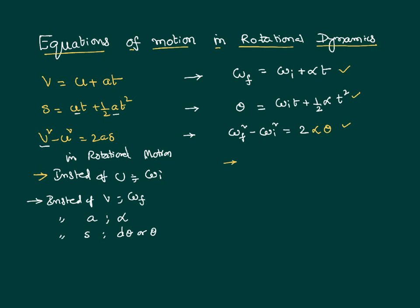The variables are omega-I, omega-F, theta, alpha, and time T. In any given problem, out of these variables in a given equation, any three will be given and you will be asked to calculate the fourth. So depending on what is given, we can choose the appropriate equation.